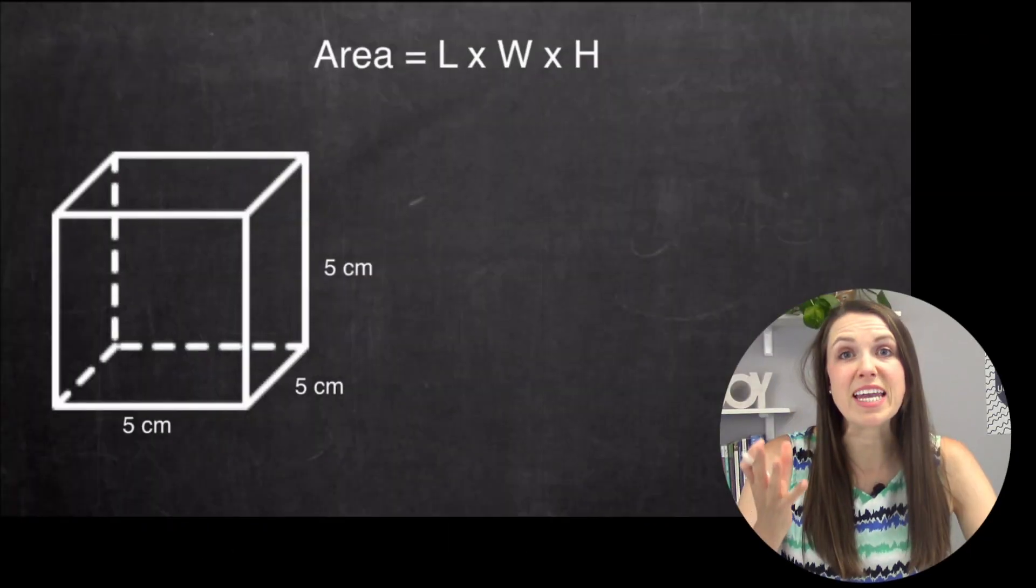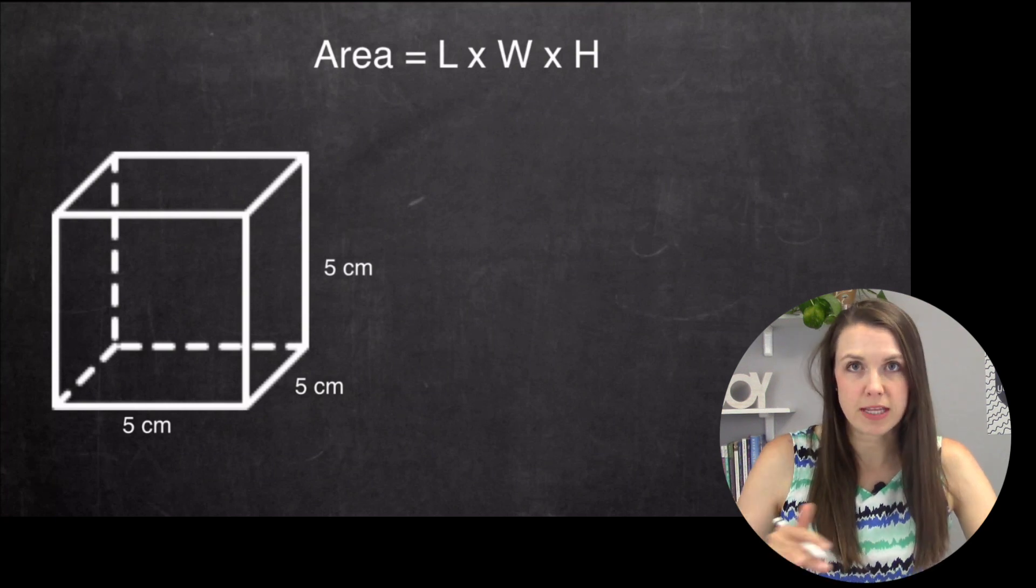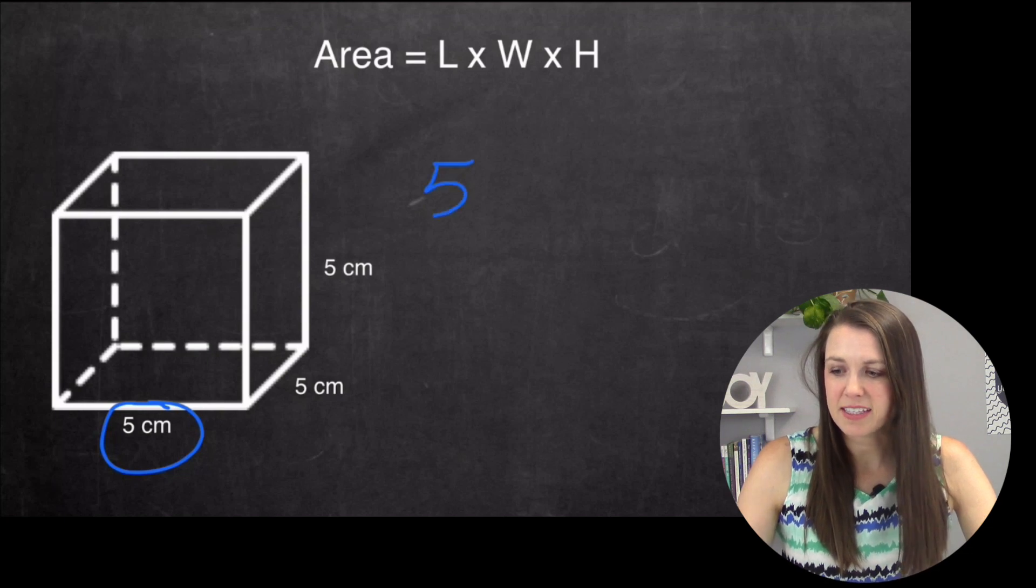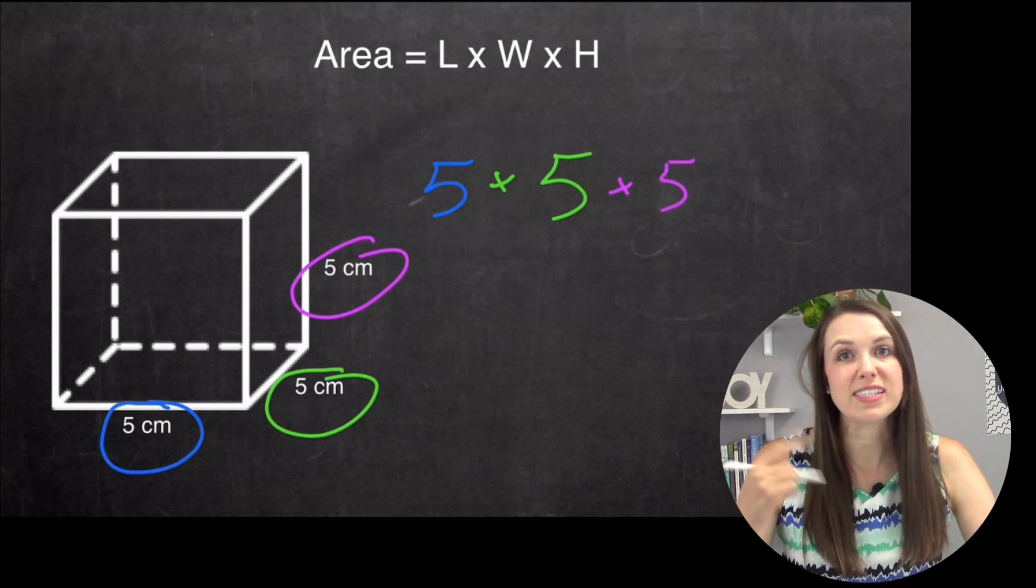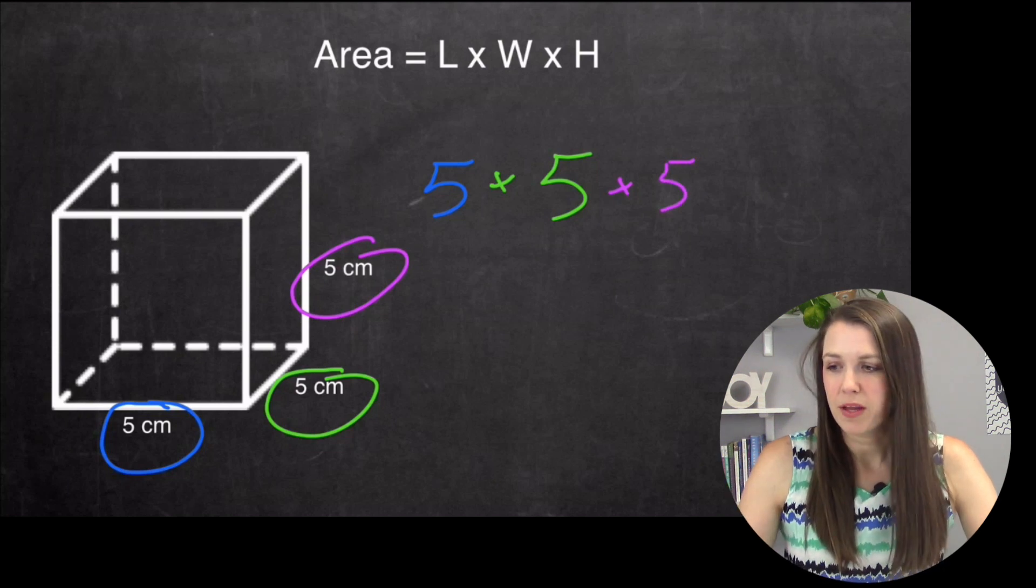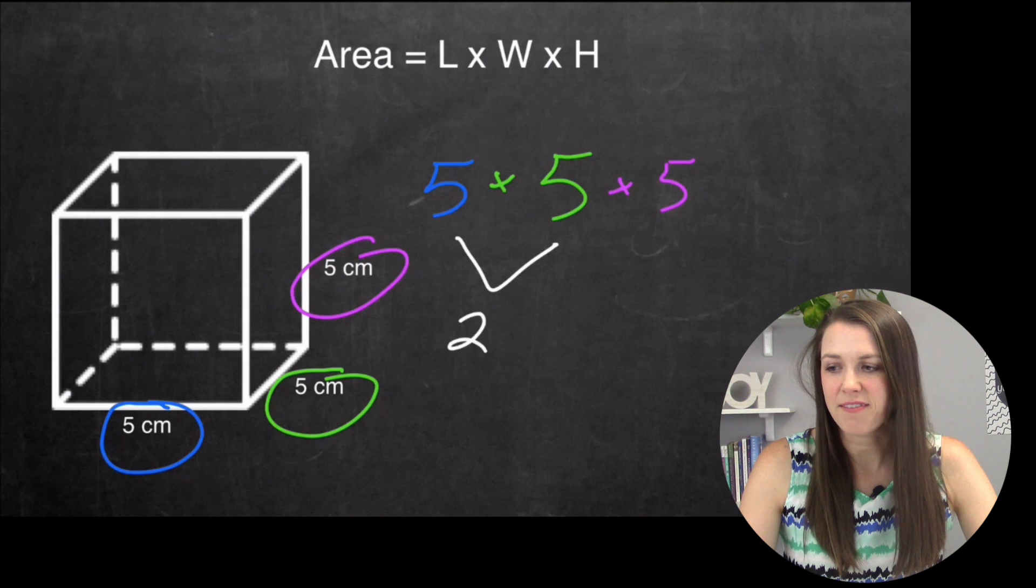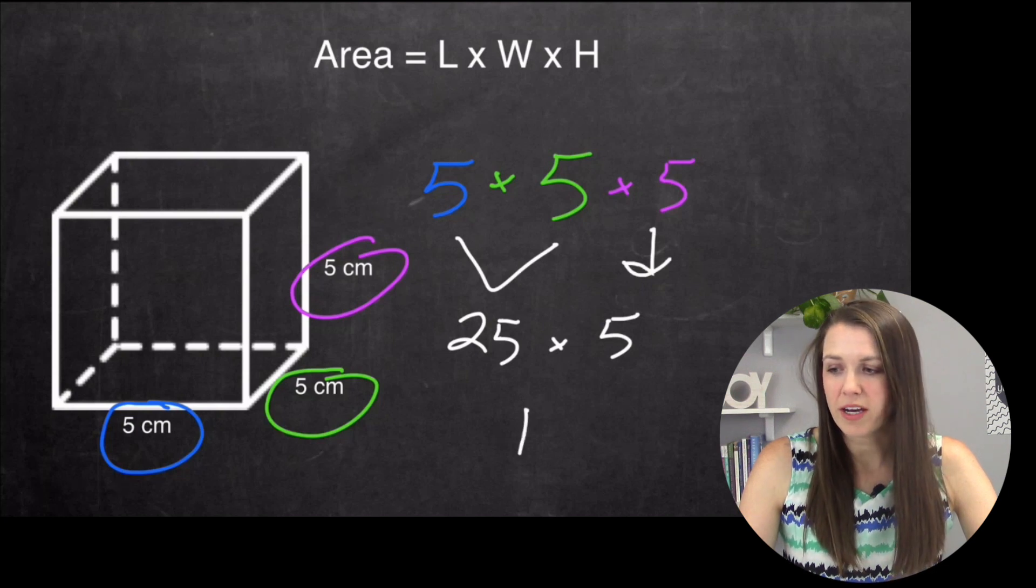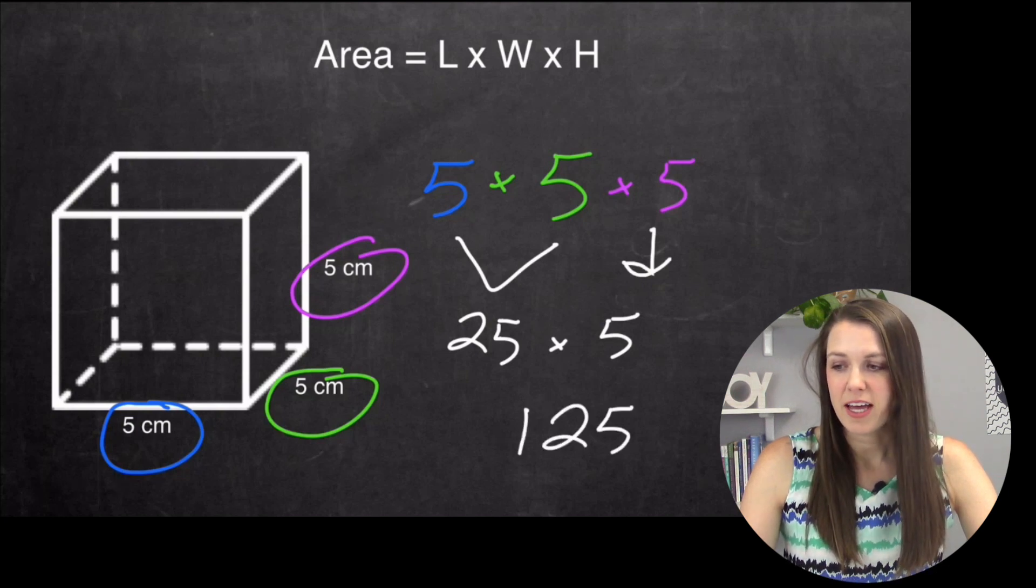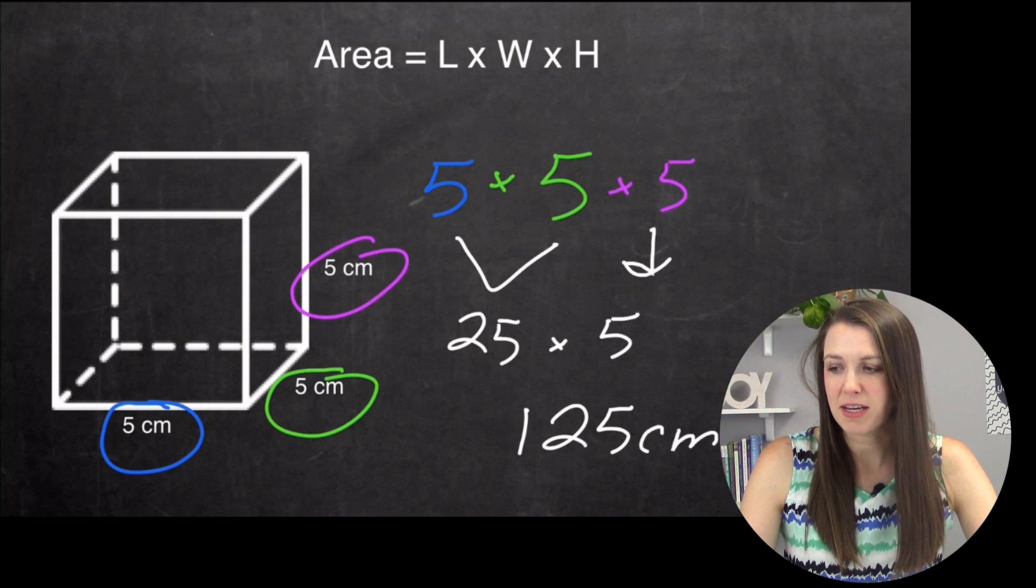Here I'm doing another cube, but I'm doing different things with it. I have my five, so that's my length times my width, I'm going green this time, times five, and then times this five here. I can do the same thing that I did before, where I can go five times five is 25, and then bring down this five, and 25 times five is 125. Then I have to make sure I go my centimeters cubed.